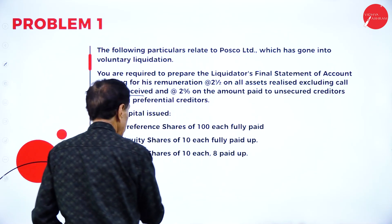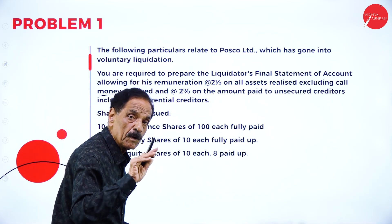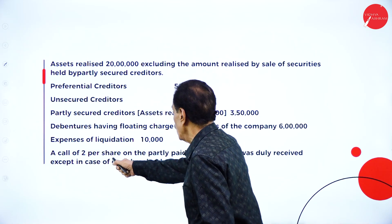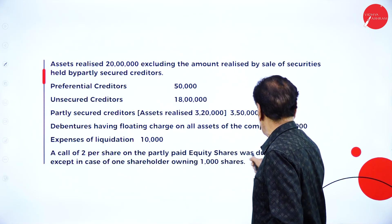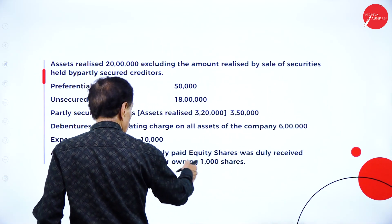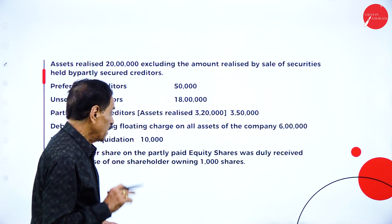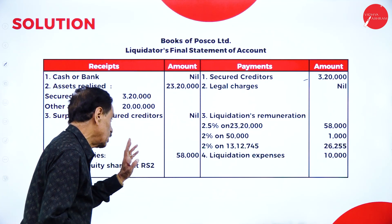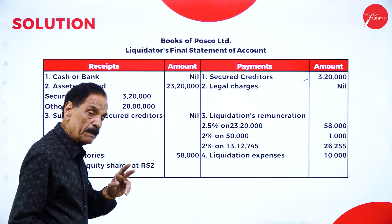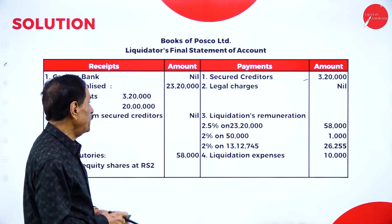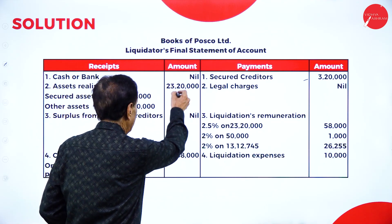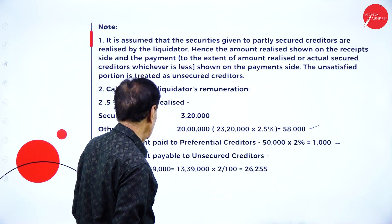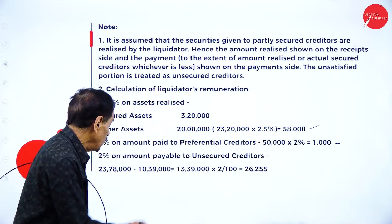Regarding the call money: there are 30,000 equity shares of Rs.10 each, Rs.8 paid up — so Rs.2 is partly paid up. A call of Rs.2 per share was duly received except in the case of one shareholder owning 1,000 shares. So you receive call money on only 29,000 shares at Rs.2 each, realizing Rs.58,000. So Rs.58,000 plus Rs.23,20,000 equals Rs.23,78,000.